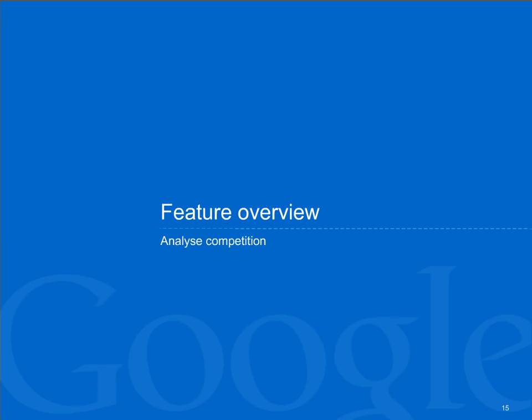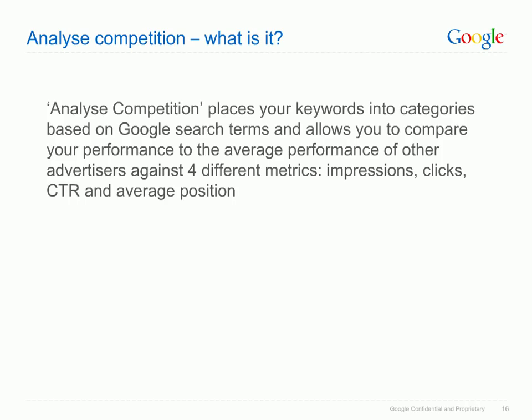We've spoken about keyword, bid and budget ideas — now it's time to learn about a feature called Analyze Competition. This feature places your keywords into categories based on Google search terms and allows you to compare your performance to the average performance of other advertisers across four different metrics: impressions, clicks, CTR and average position.